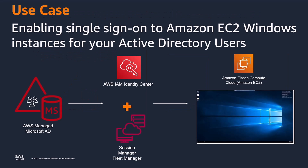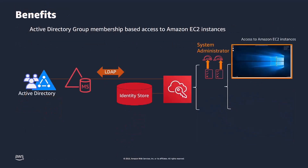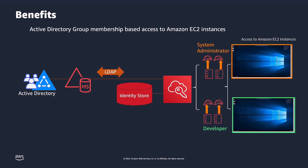Enabling single sign-on access to Amazon EC2 Windows instances for your workforce has multiple benefits. First, an Active Directory group mapped to an AWS IAM Identity Center permission set simplifies the assignment of AWS account access and Amazon EC2 Windows instances for users and groups in your organization. For example, you can create a System Administrator AD group, map the AD group to a System Administrator permission set that includes policies for administrating Amazon EC2 Windows instances, and use that single permission set to grant access to a list of target AWS accounts within your organization. Similarly, you can follow the same process for developers and other job function-specific AD groups. This reduces the operational overhead and provides identity administrators a straightforward mechanism to manage access to EC2 Windows instances at scale in your organization.